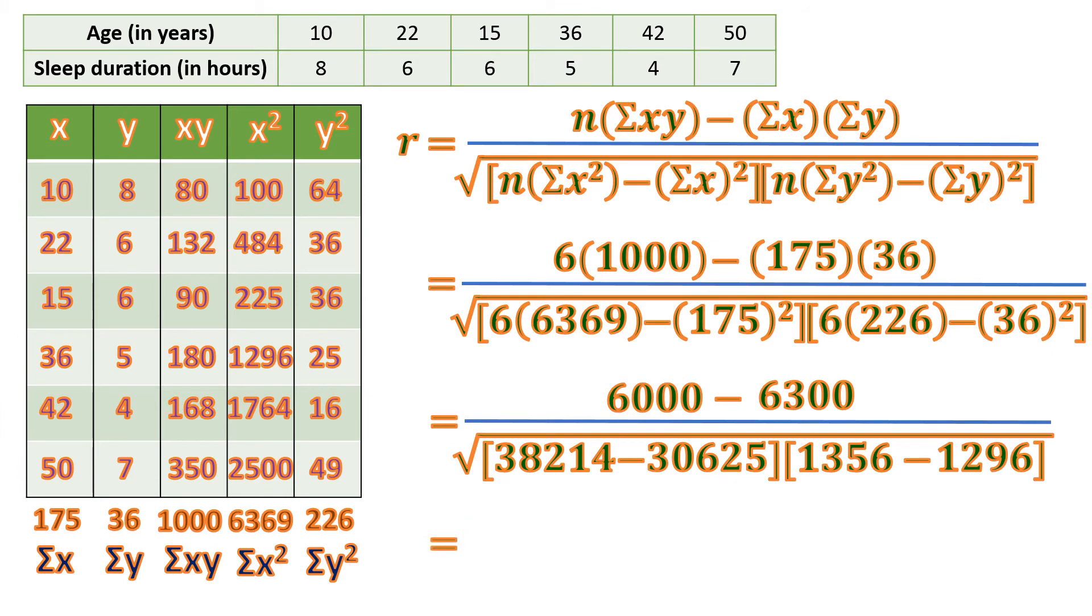Let's continue. We get the difference of 6000 and 6300, which is negative 300, over the square root of the difference of 38214 minus 30625, which is 7589, and the difference of 1356 and 1296, which is 60.